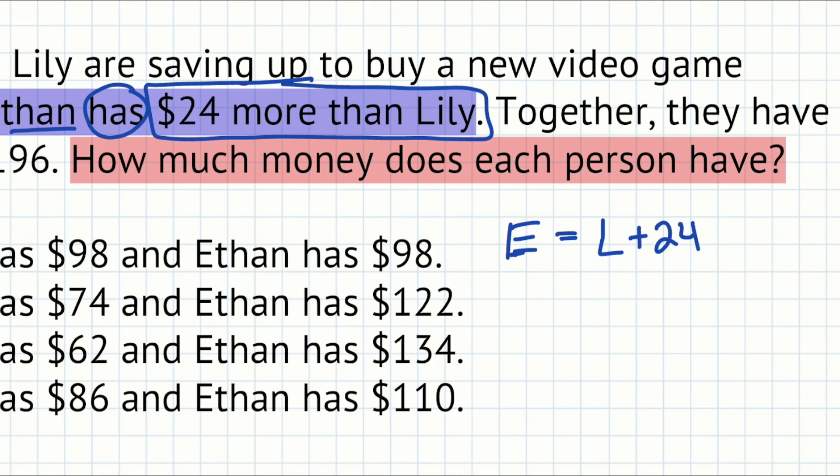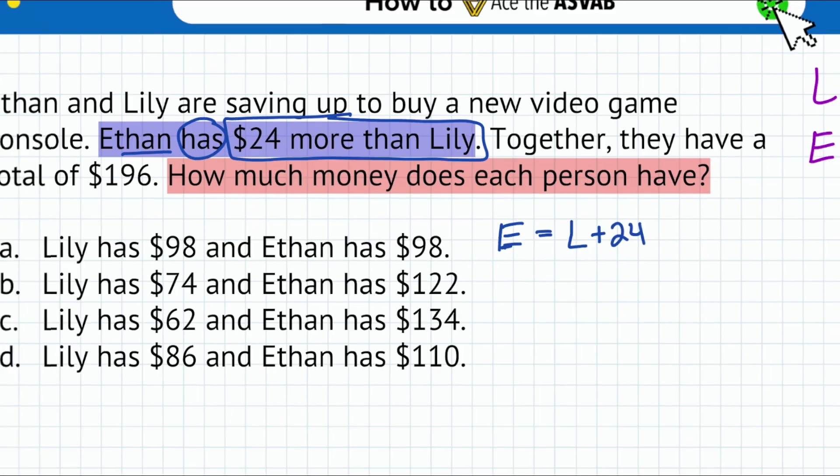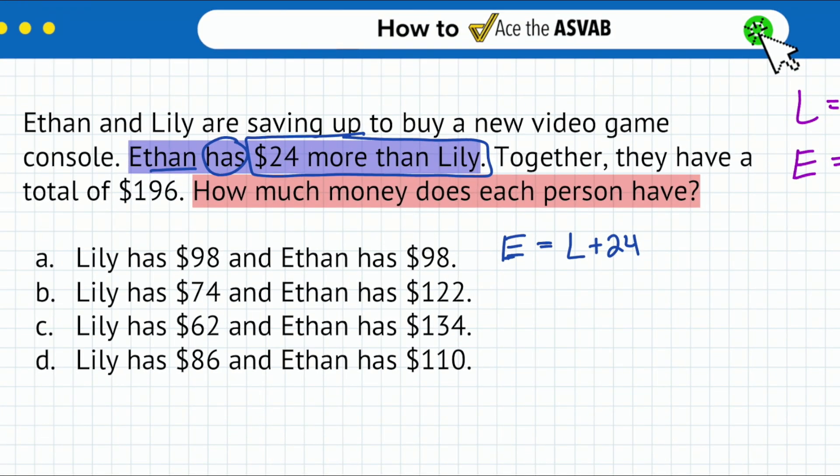Again, all we're doing is writing equations here. It's very important that we know how to do this because we'll use this to actually solve. So as always, my party people, word problems come in two phases: setting it up and then actually solving and calculating. So you can't overlook one because it helps you with the other. Now let's take that second hint. Together they have a total of $196. That tells me that Ethan plus Lily equals $196.